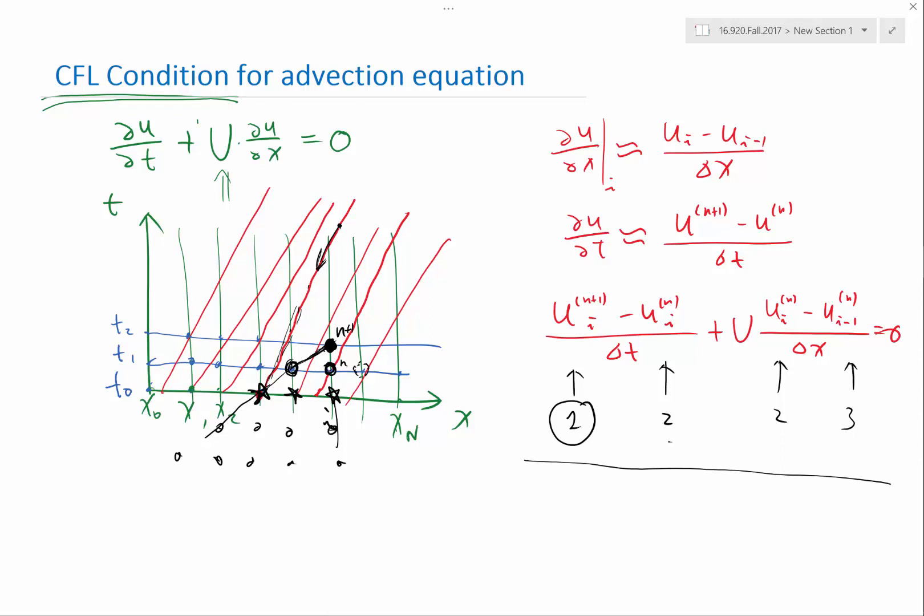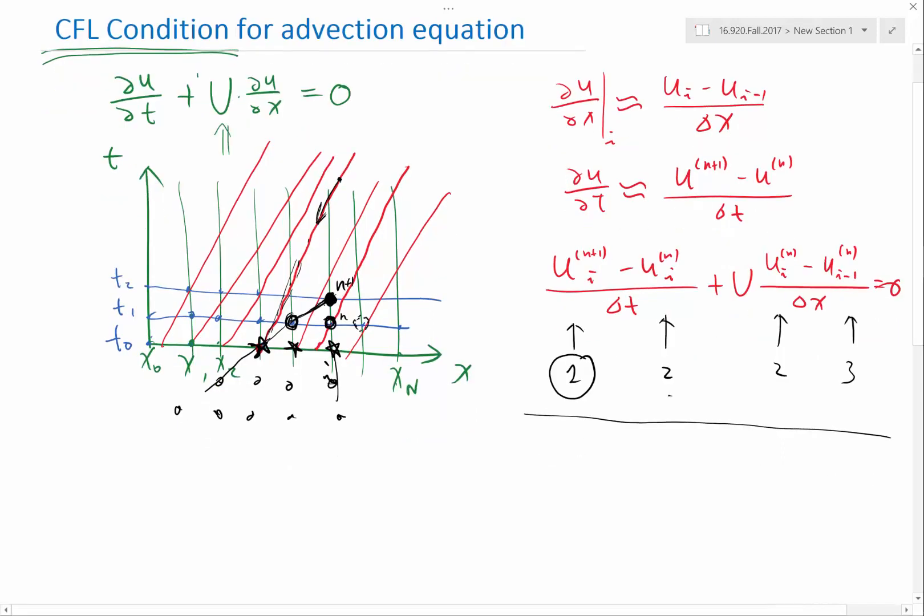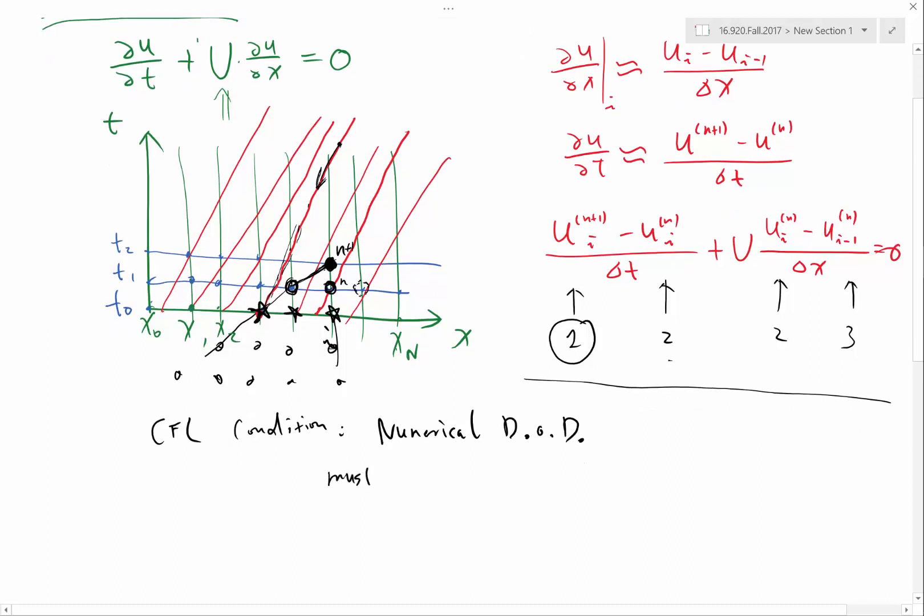So the CFL condition says that this numerical domain of dependence must cover the real analytical, physical domain of dependence. It makes sense because - yes, question? Can you explain again? It doesn't mean the triangle of dots in Jamaica.